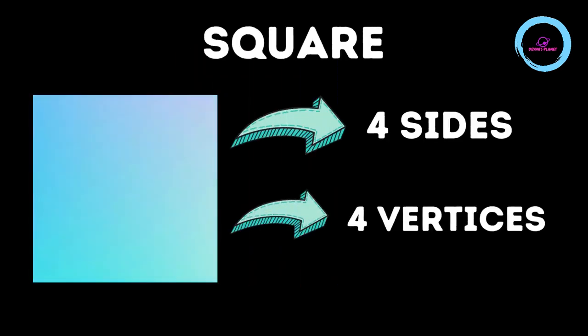This is a chess board. This is a cheese slice. And this is a handkerchief. So what's common in all these? They are all squares. A square has four sides and four vortices.